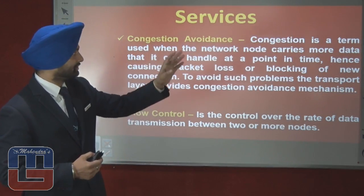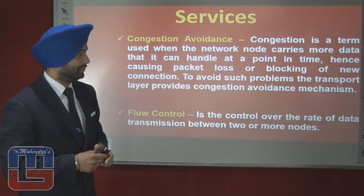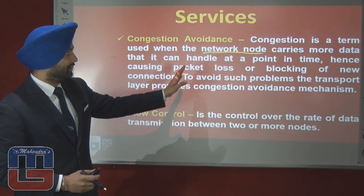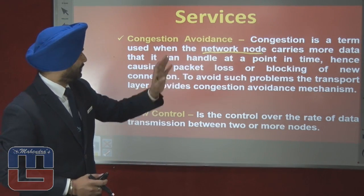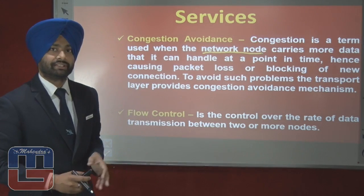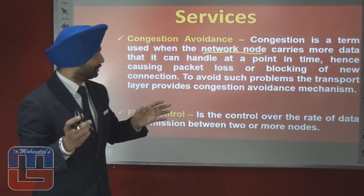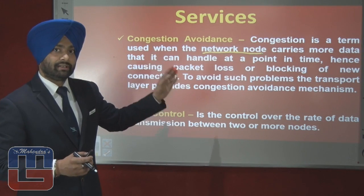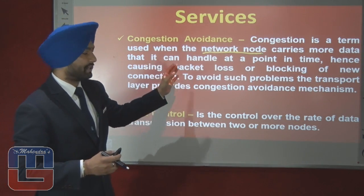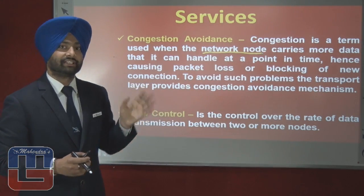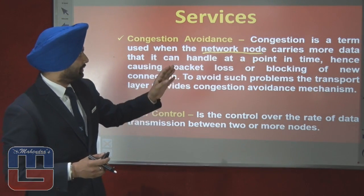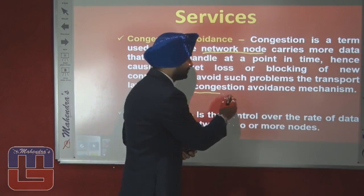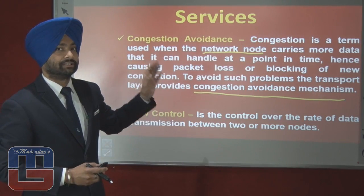The next service is congestion avoidance. Congestion is a term used when a network node carries more data than it can handle at a point in time, hence causing packet loss or blocking of new connections — it is somewhat like overloading of a network node. In such a case, new connections cannot be established. To avoid this, the transport layer provides the congestion avoidance mechanism. This is a point that should be remembered for the SOIT or PU examination.